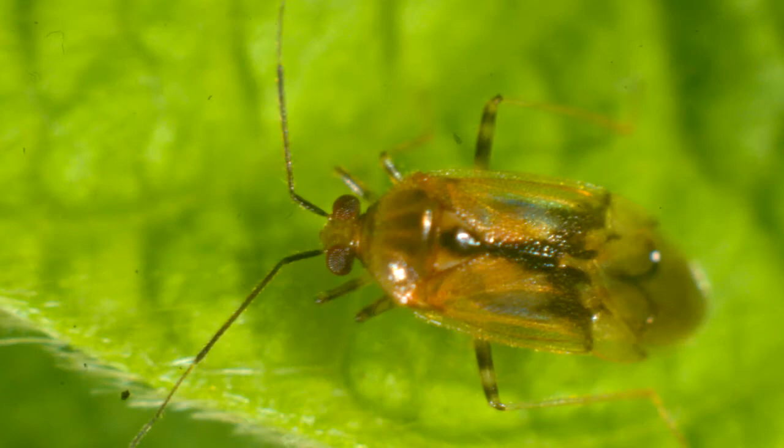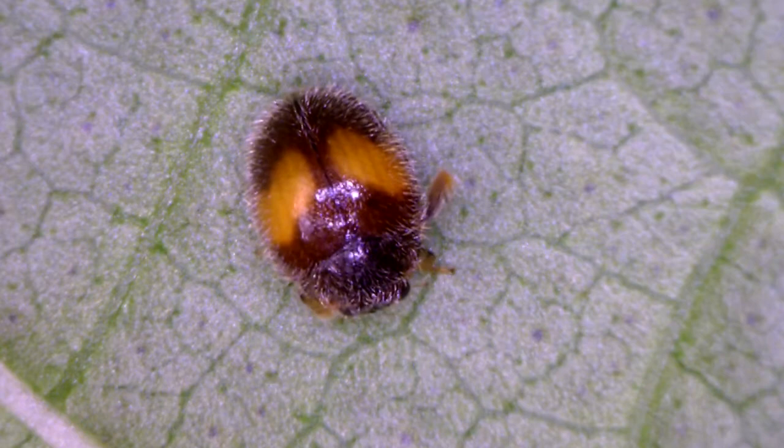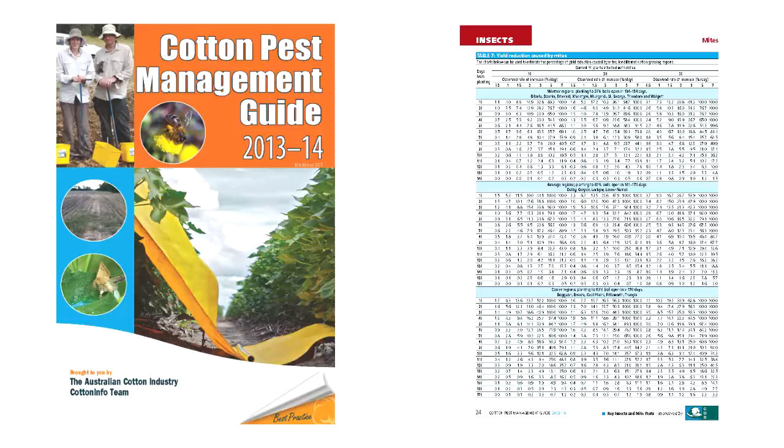But other predators are important too: big-eyed bugs, brown smudge bugs, minute pirate bugs, minute two-spotted lady beetle, apple dimpling bugs, and even green mirids will attack mites. They're a soft-bodied insect that can't move very fast, so a lot of things like to eat them.